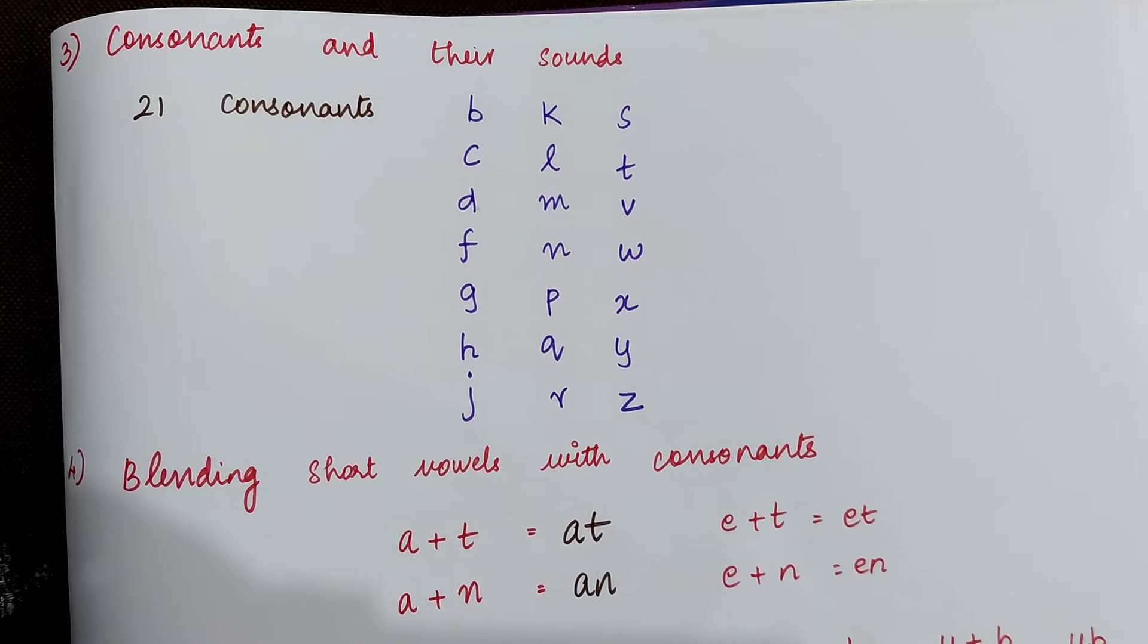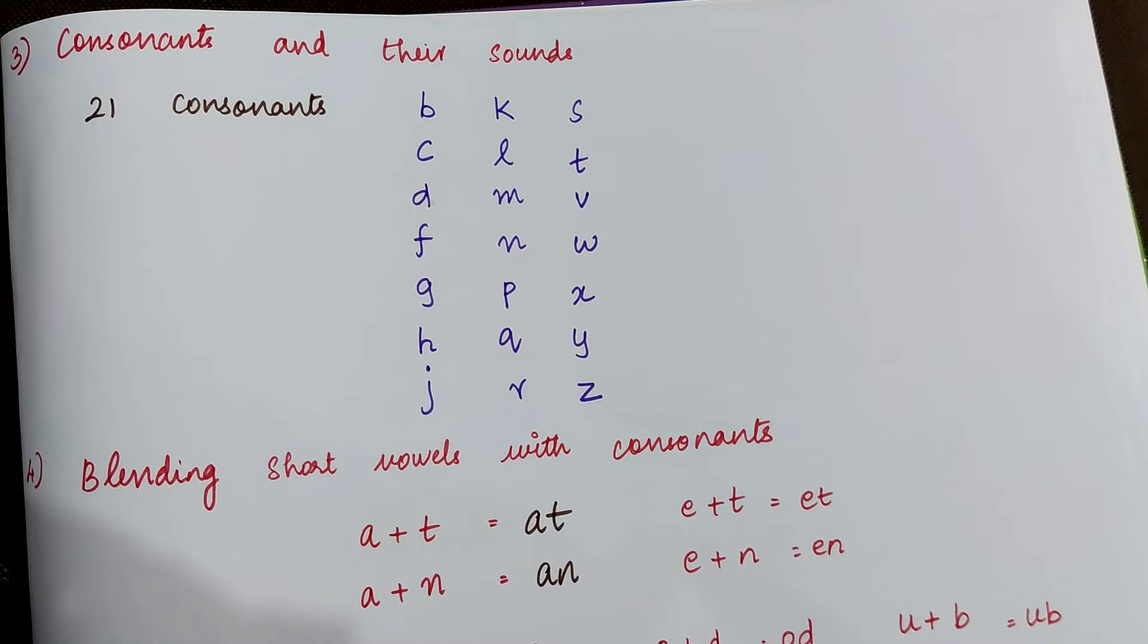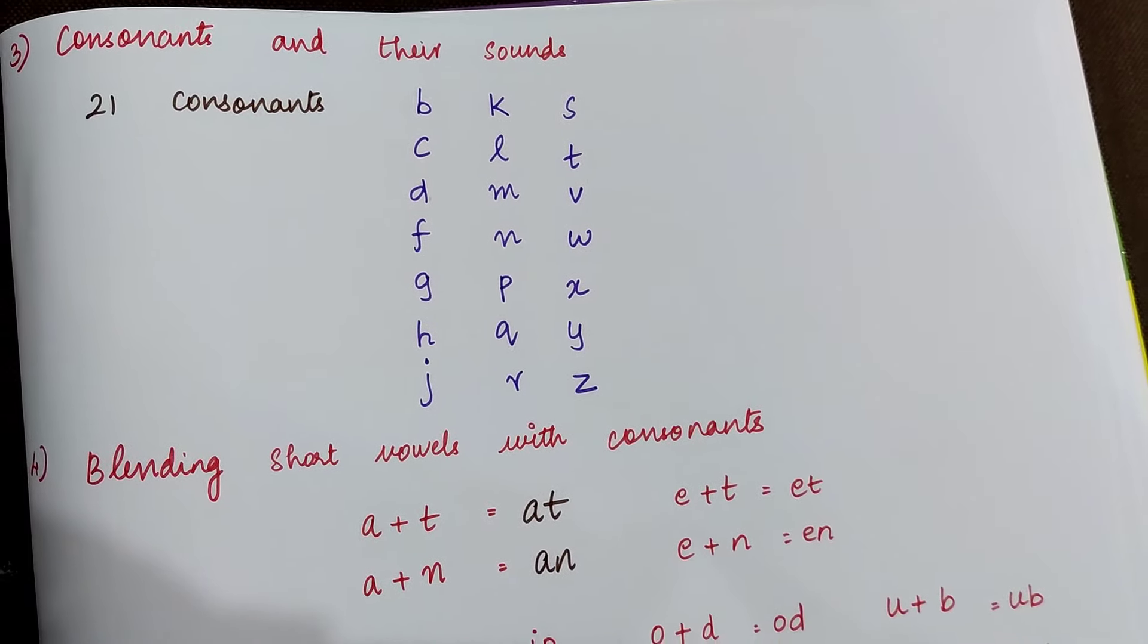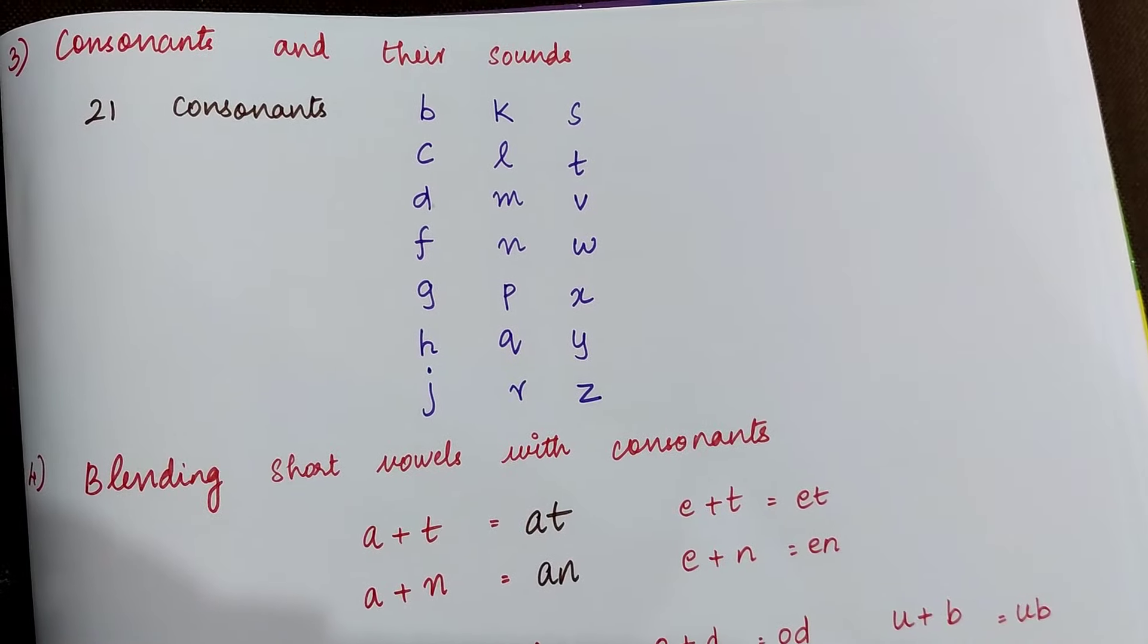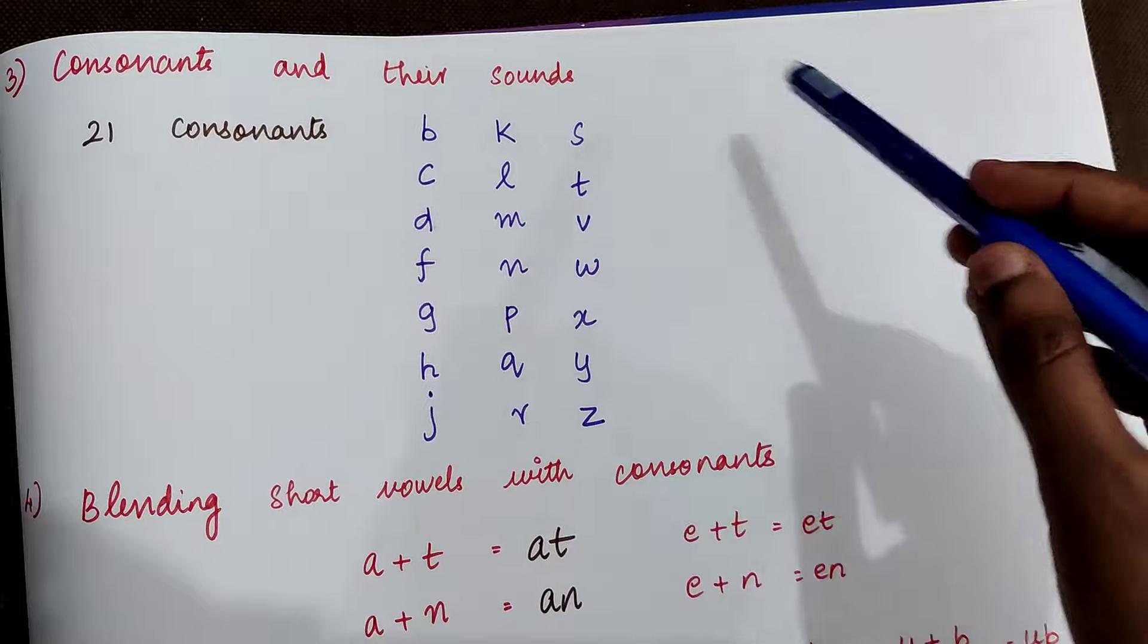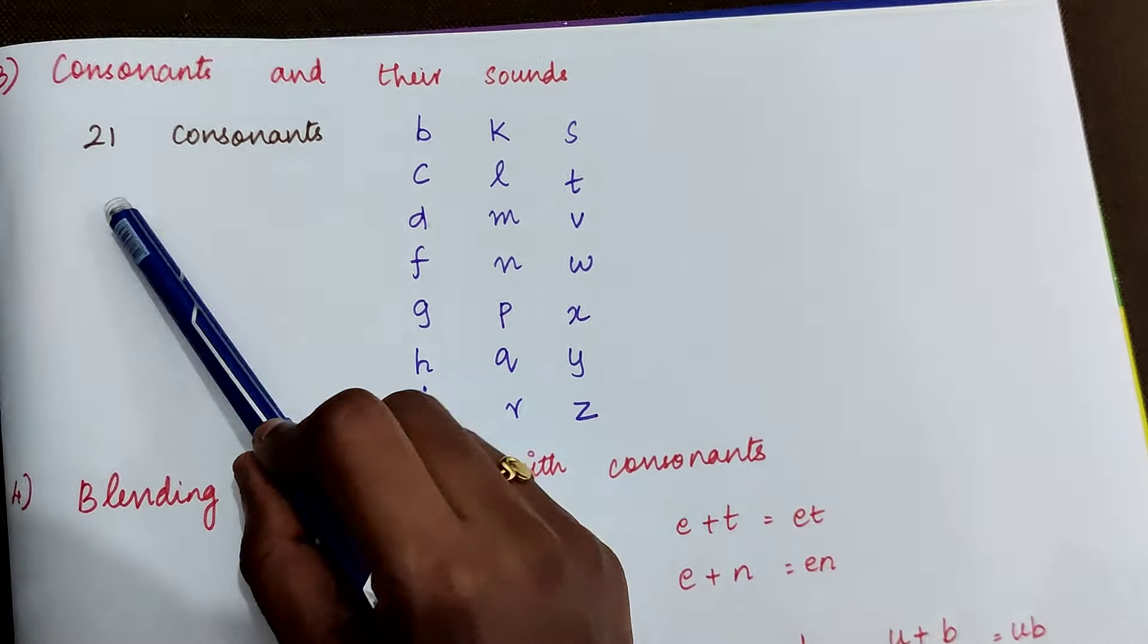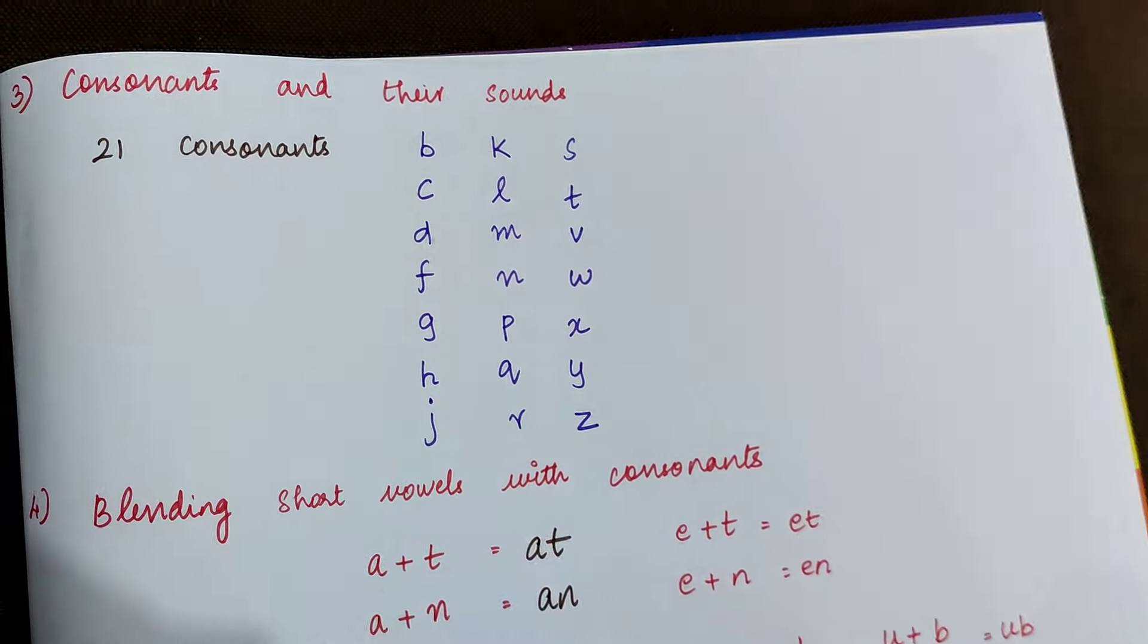So after teaching the vowels and their sounds, especially short sounds, we can move on to consonants and their sounds. The letters other than the five vowels are the consonants, so there are 21 consonants. So we need to teach the child all the 21 consonants and their sounds using the same flashcard and clue word method.